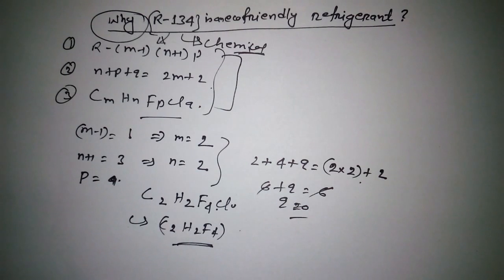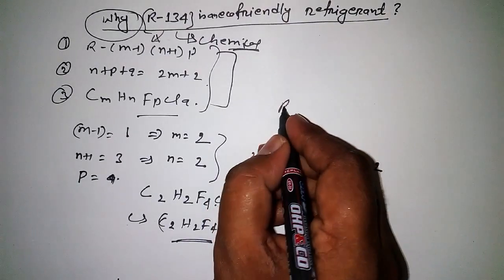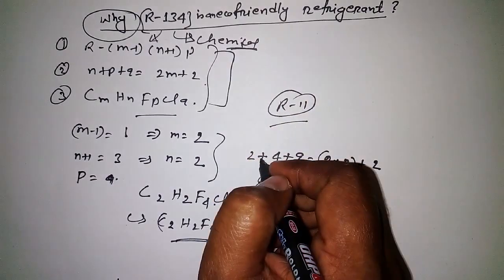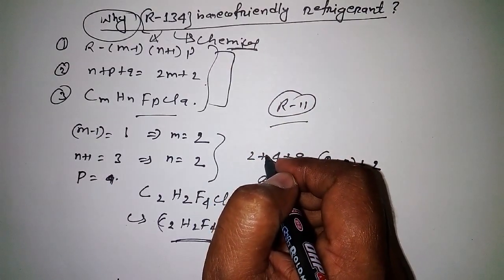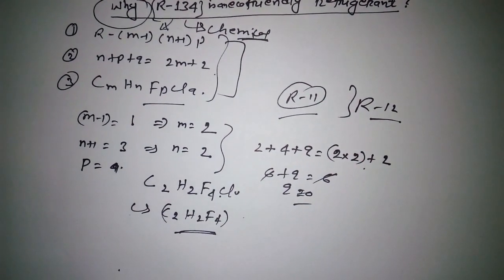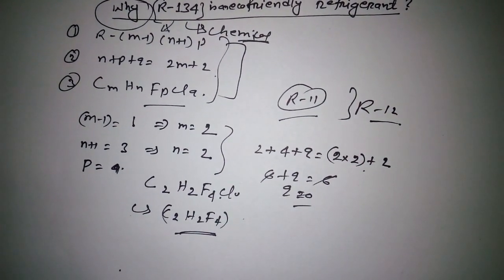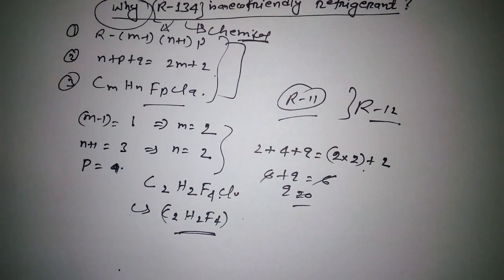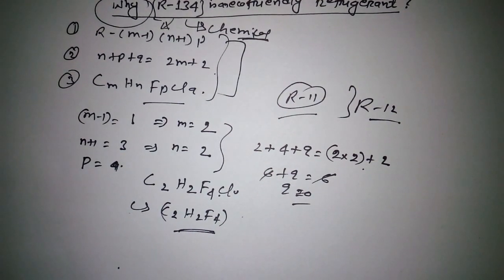Suppose that if I want to calculate R-11, then this is not an eco-friendly refrigerant. Not even R-12, because all these kinds of refrigerants have chlorine atoms.